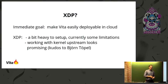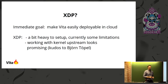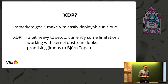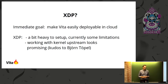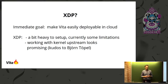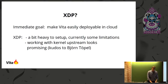I hit some limitations with XDP which mostly have to do with conflicting memory allocation models between XDP and Snap. However, working with kernel upstream on these issues looks promising — kudos to Bjorn Turpel for helping out with that. I have a blog post on how to do XDP without libbpf if you're interested.